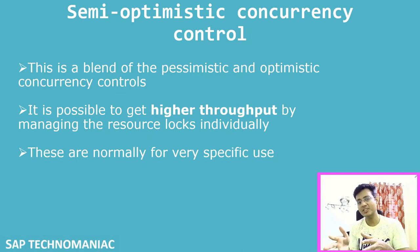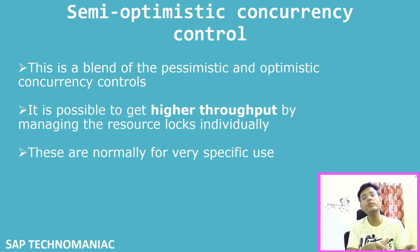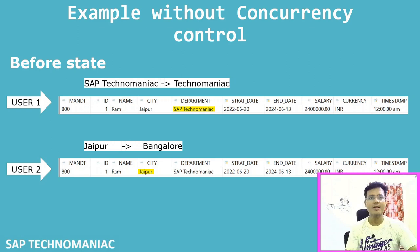Semi-optimistic concurrency control is a mix of both pessimistic and optimistic. The goal is to get better performance. We use optimistic concurrency control for some tables and pessimistic for others within the same program. This is for very specific use cases.